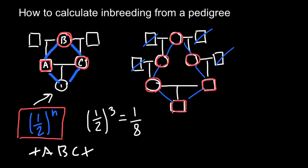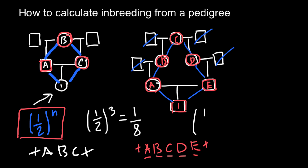Now we just have to calculate our pathway. Once again, this would be person I, and these are going to be A, B, C, D, and E. Our pathway would be I, A, B, C, D, E, and I. We ignore the unrelated individuals and count how many nodes we have: 1, 2, 3, 4, and 5. So our calculation would be one-half raised to 5, giving an answer of 1 over 32.